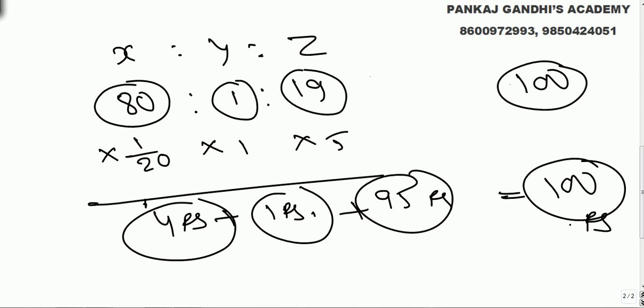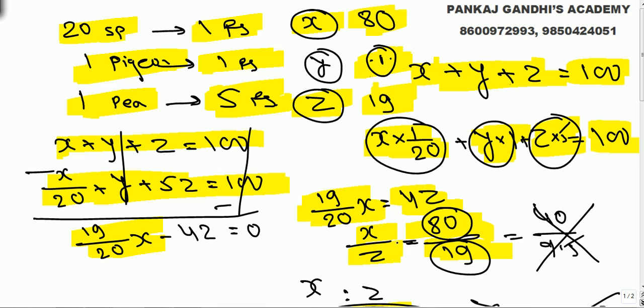100 birds and 100 rupees. The only logic of the question, or the most important logic, was x as to z ratio has to be 80 as to 19, otherwise we will get in points. That was the important logic here.